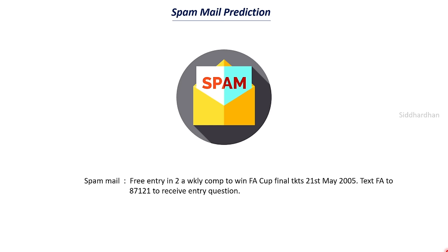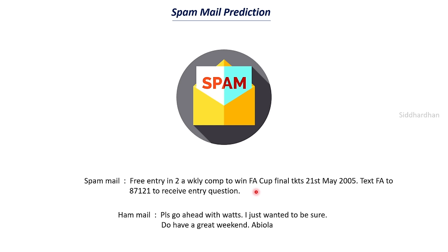We can classify mails as two types: one is spam mail and the other is ham mail. Spam mail claims to give you some offers and gifts, and most of the time they won't be true. For example, this mail says: 'Free entry into a weekly competition to win FA Cup final tickets 21st May 2005, text FA to 87121 to receive entry.' This is an example of a spam mail which is most probably false. Ham mails are non-spam mails — they can be mails sent to you by family members, friends, or co-workers.